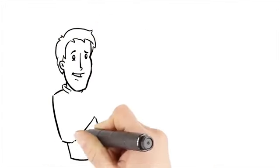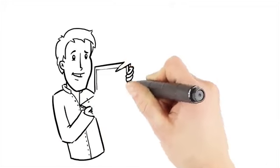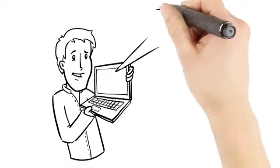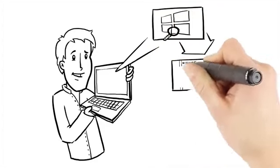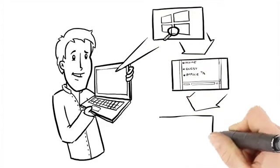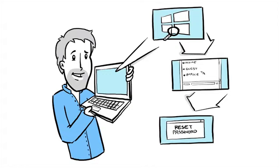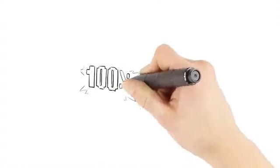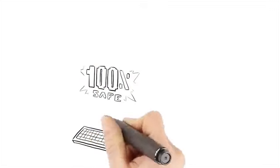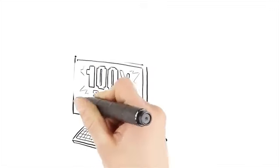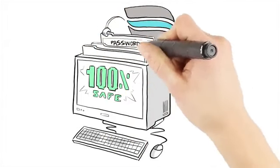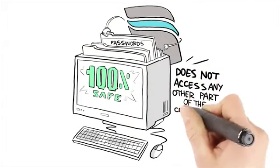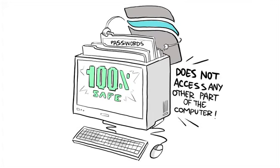This is where Reset Password Pro can help. Reset Password Pro works by searching your locked Windows computer for all user and administrator accounts. It then lists them, allowing you to select which one you wish to reset the password for. This process is 100% safe for your files and entire system. Reset Password Pro will simply reset the password for your chosen user or administrator account and does not access any other part of the computer.